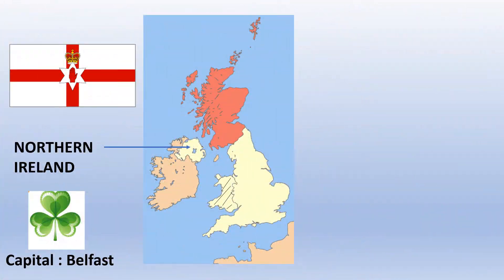And to finish, you've got Northern Ireland. This is the upper part of the island, whose capital is Belfast. Its symbol is the shamrock with three leaves, and on the flag you can see there's the red hand. This is part of the British Kingdom.